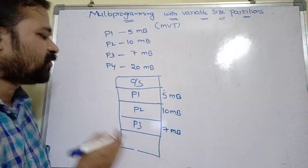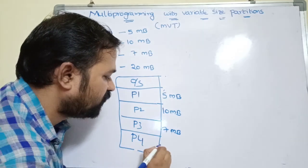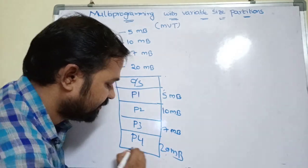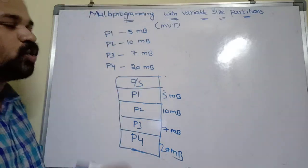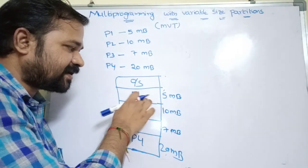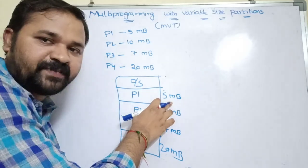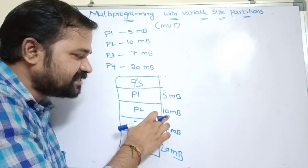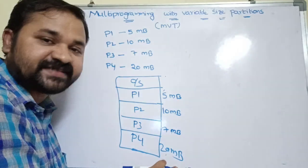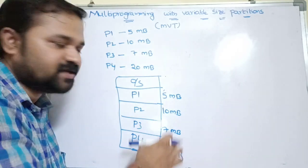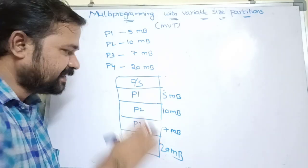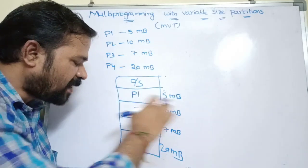P4 gets 20 MB of memory allocated. So this is multiprogramming with variable size partitions — the first partition is 5 MB, second is 10 MB, third is 7 MB, and fourth is 20 MB. The size of a partition depends upon the size of a process, and the number of partitions depends upon the number of processes.